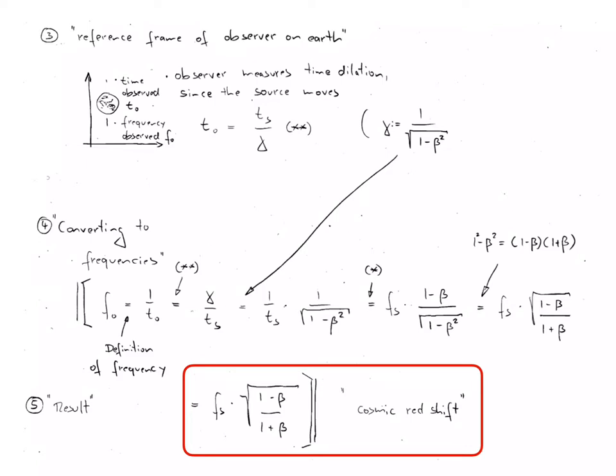Because the observer measures a time dilation since the source moves away, due to special relativity, the observed time interval is given as the proper time interval ts divided by gamma, whereby gamma is another parameter of special relativity, which is defined as 1 over the square root of 1 minus beta squared.